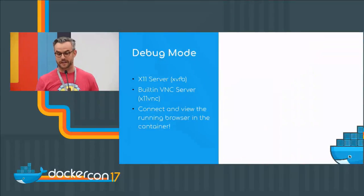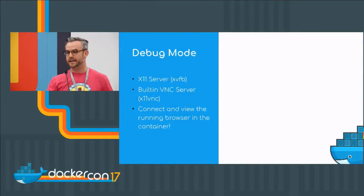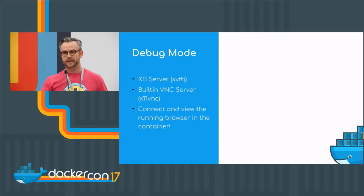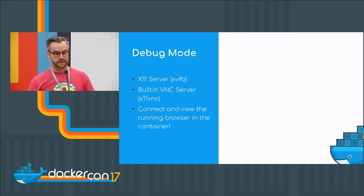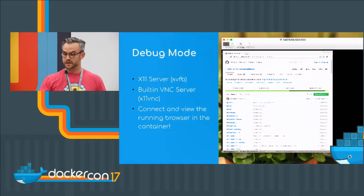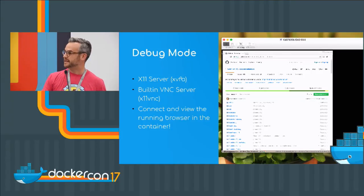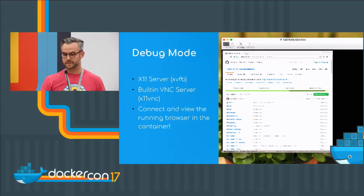What we found really cool was that if you're running in debug mode — there's an image available for that — it actually has a built-in VNC server and a built-in X11 server. So if you're trying to debug some unexpected test results, you can connect using VNC to the container and see the browser running live. In this screenshot, this is a VNC client connected to a running container, and normally you'd have some tests running.